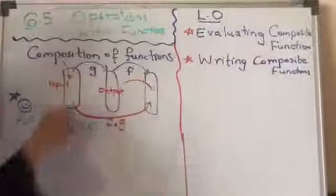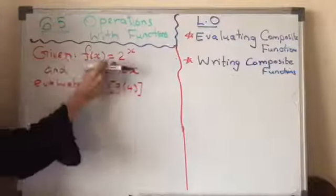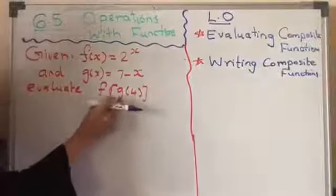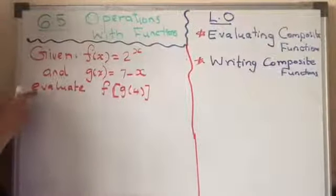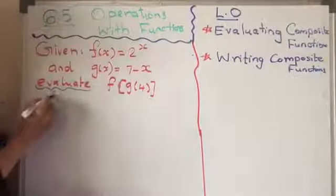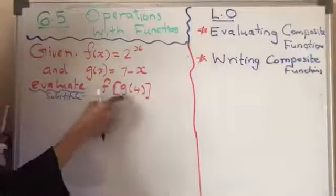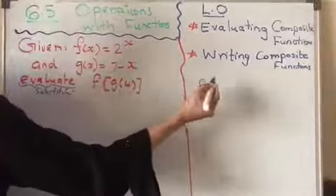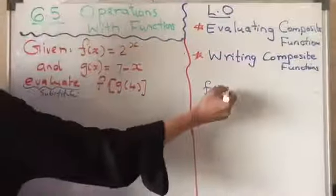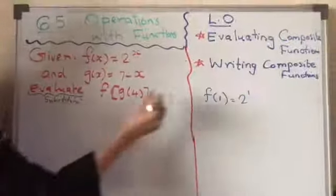How we will evaluate? This is the question: given f(x) is 2 to the power of x and g(x) is 7 minus x, evaluate f of g 4. What does this mean? And evaluate, if you know evaluate, you need to plug it. You need to substitute. If I wanted to find f of 1, in f in place of x, I need to substitute 1. So I will write f(1) is equal to 2 to the power of 1. This is the meaning of evaluate.